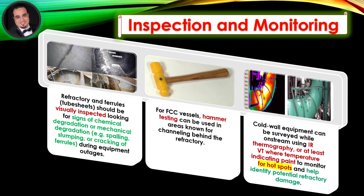Refractory and ferrules should be visually inspected during equipment outages, looking for signs of chemical or mechanical degradation — for example, spalling, slumping, or cracking of ferrules. For FCC vessels, hammer testing can be used in areas known for channeling behind the refractory.